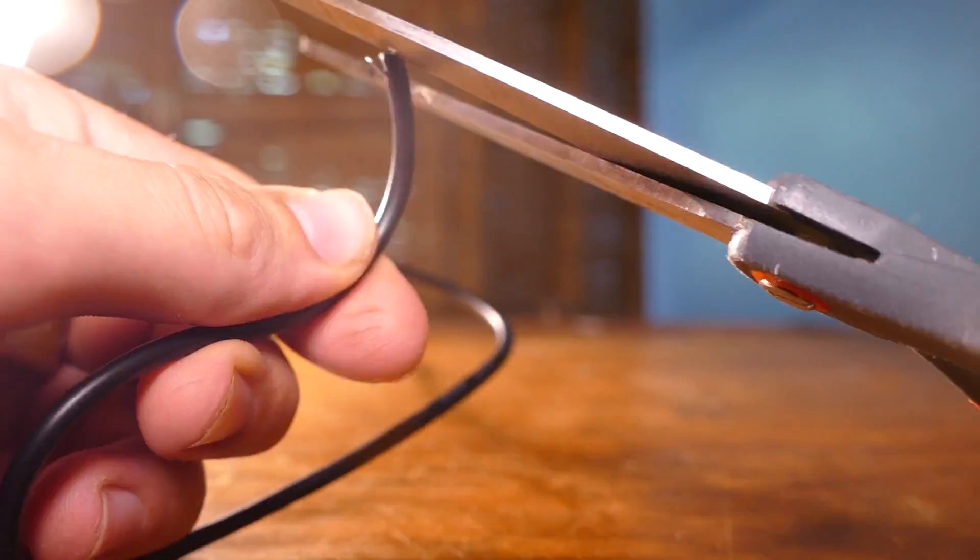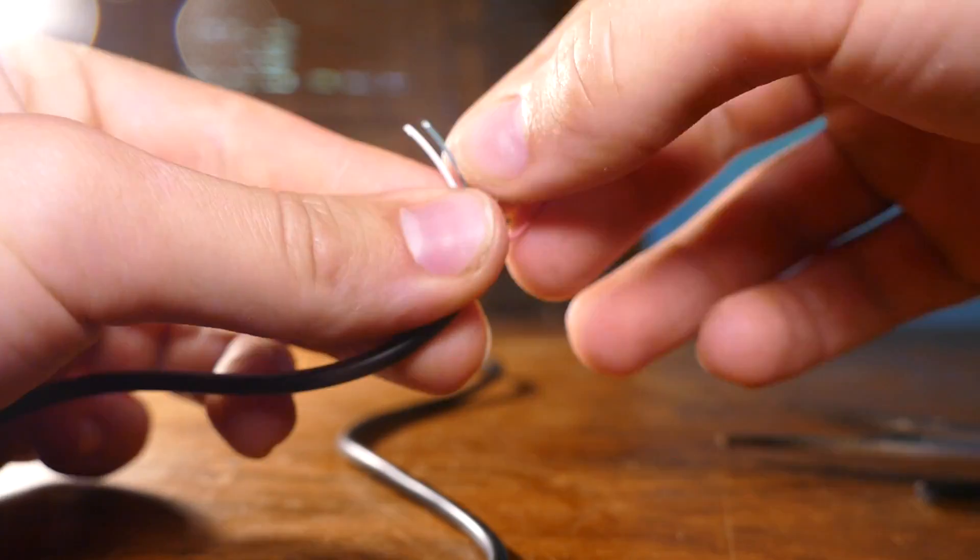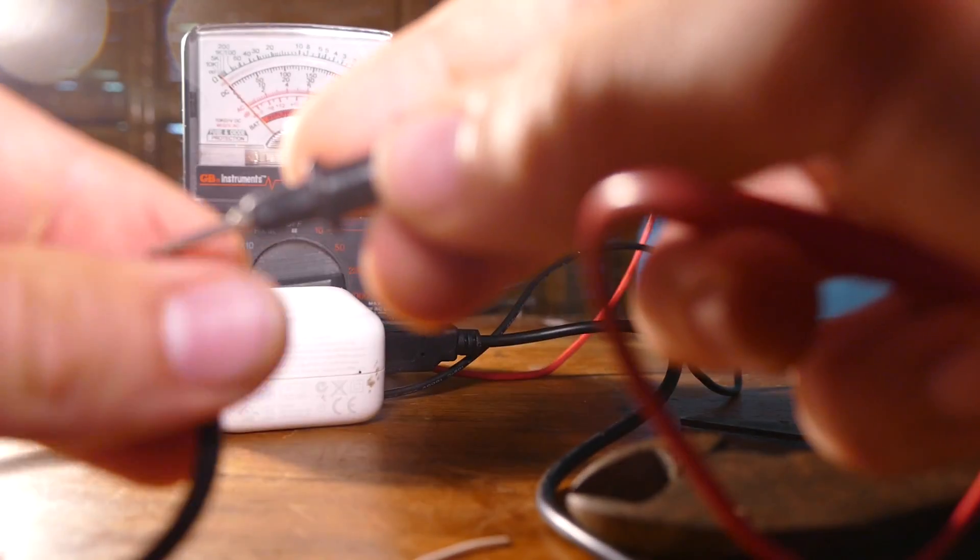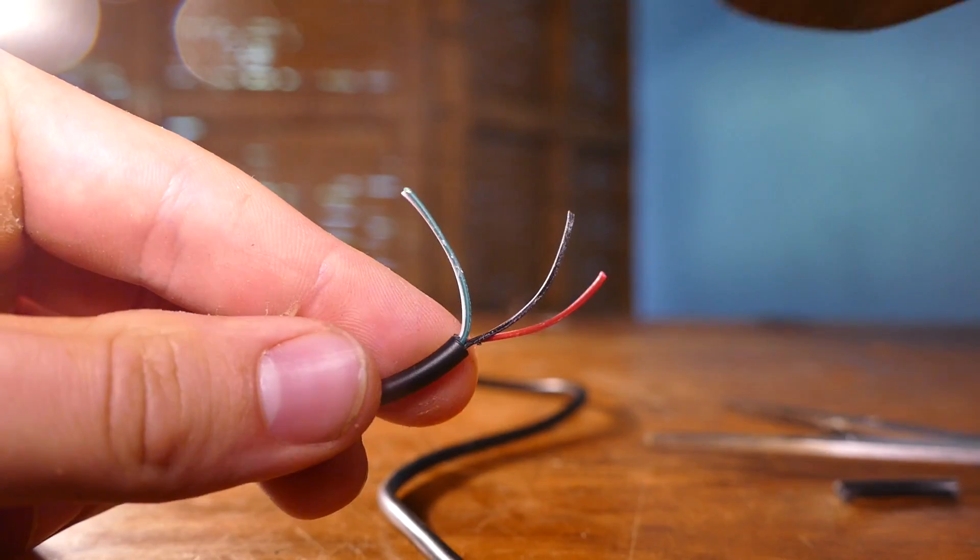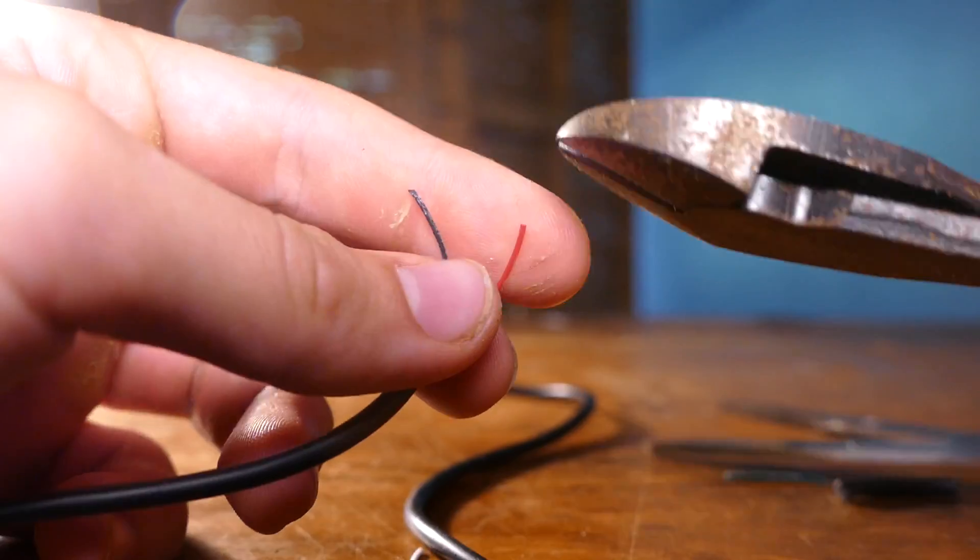First cut the cable and strip down the wires. You'll likely find four wires. As you can see the red and black wires carry the power. So cut off all the others then strip down the red and black ones.